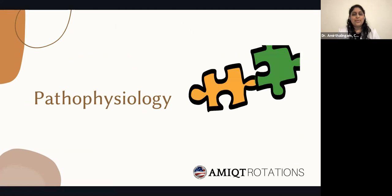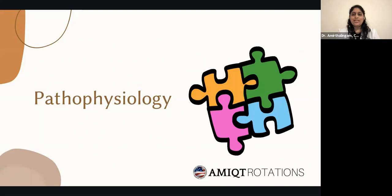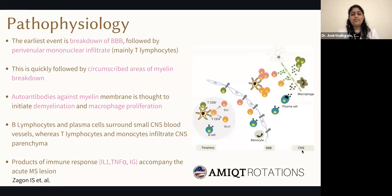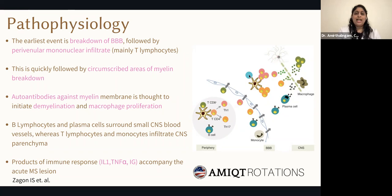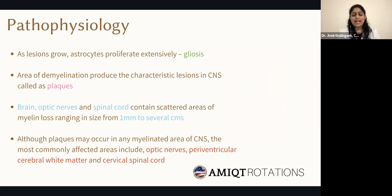Now, what exactly occurs on a molecular level — how does this demyelination process occur? The first event in multiple sclerosis is a breakdown of the blood-brain barrier. The blood-brain barrier is very tightly regulated as to what can enter the central nervous system. In MS, T cells and B cells invade the CNS, crossing the blood-brain barrier and releasing immune components such as immunoglobulins and TNF-alpha, initiating the demyelination process. This continues to form gliosis and plaques, ranging from one millimeter to several centimeters, predominantly in the brain, spinal cord, and optic nerves.